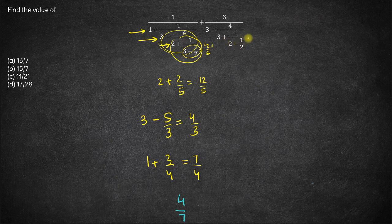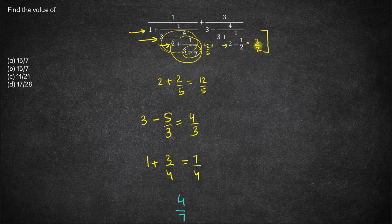Now let us look at the second term. This part here is 2 minus half, which is 2 into 2, giving 4, and 4 minus 1 is 3/2. Now let us look at this part: we have 3 plus 1 upon 3/2, which is 3 plus 2/3. This comes out to be 3 into 3 is 9, and 9 plus 2 is 11/3.